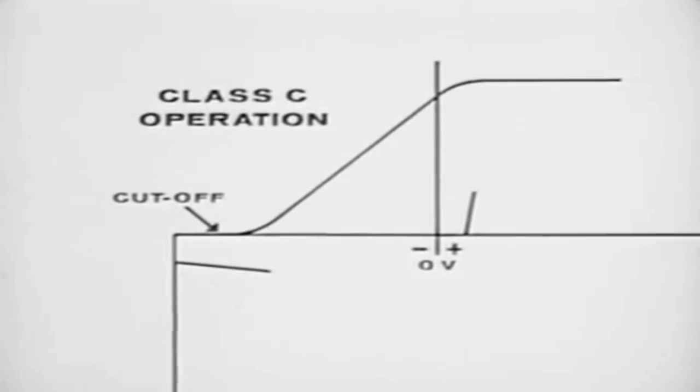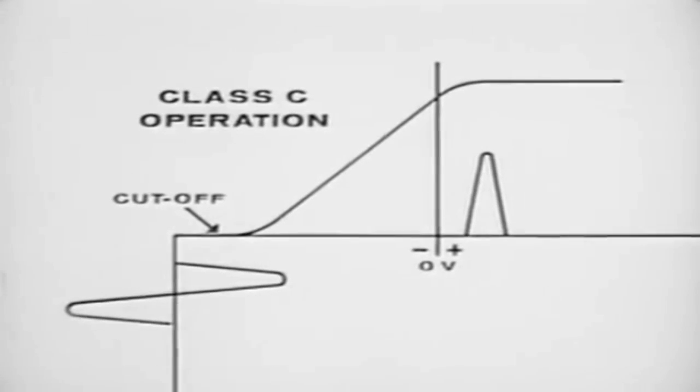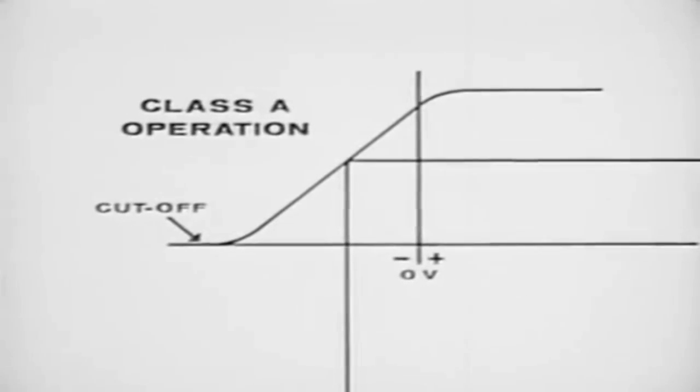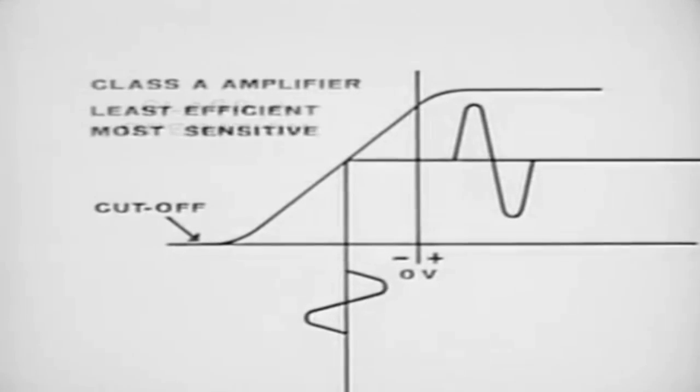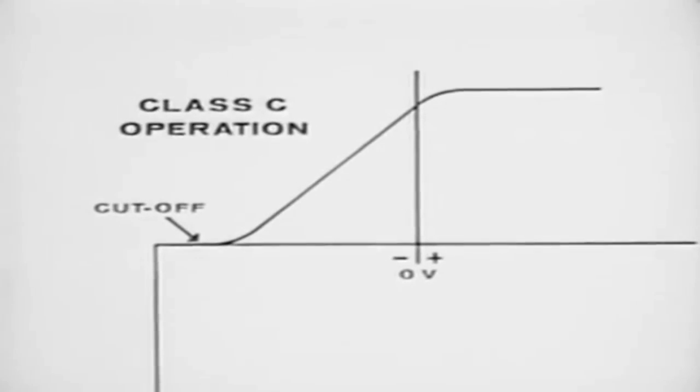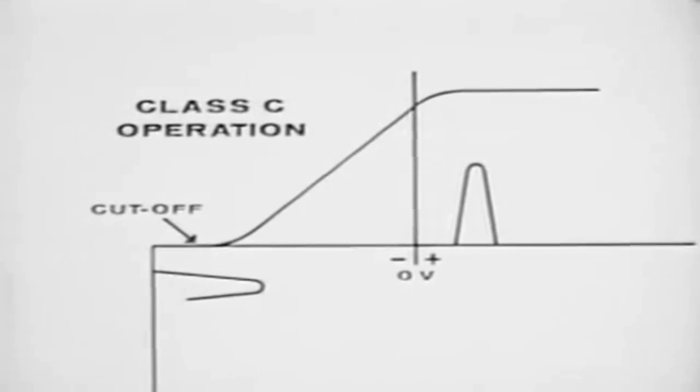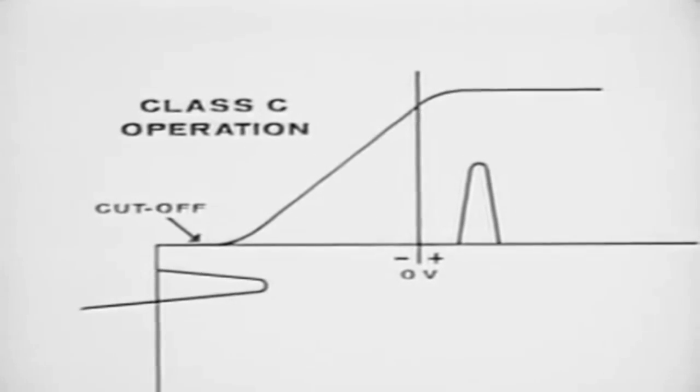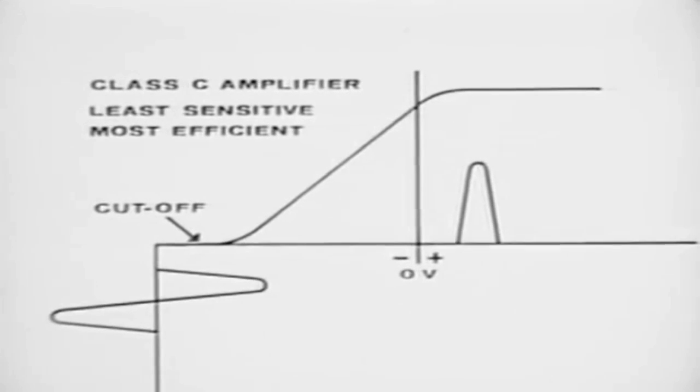If we bias the tube below cutoff, we have a Class C amplifier. This class of amplifier is almost exclusively limited to radio frequency applications. In a Class A amplifier, the plate current flows during the entire input cycle. This makes the Class A amplifier the least efficient yet the most sensitive. As another example, in a Class C amplifier, plate current flows only during a portion of the positive half of the input signal and is cut off at all other times. The Class C amplifier is the least sensitive but the most efficient.